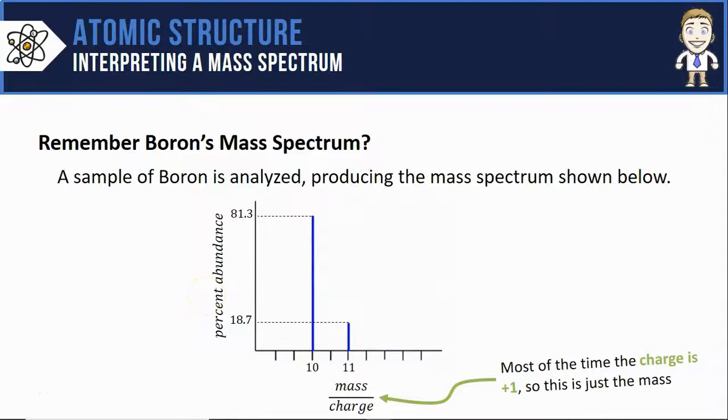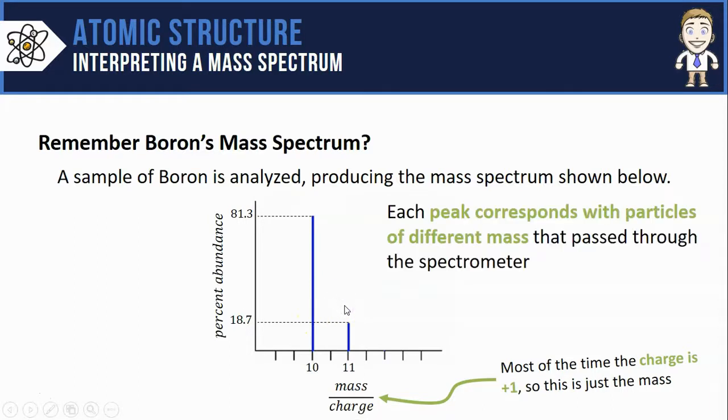Remember from the last video we took a close-up look at boron's mass spectrum. It's got these two peaks here shown in blue, and since each peak corresponds with particles of different mass, I learned that boron atoms come in two different masses, otherwise known as isotopes: boron-10 and boron-11.